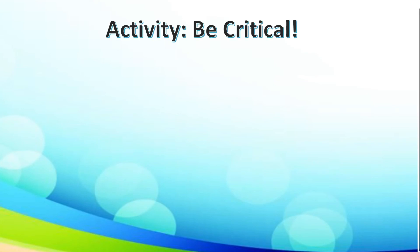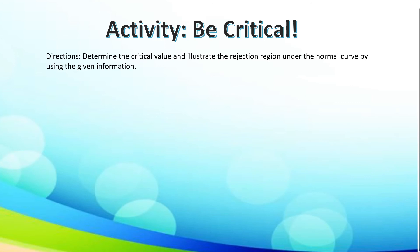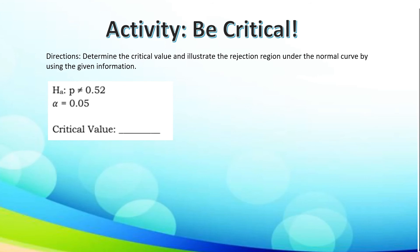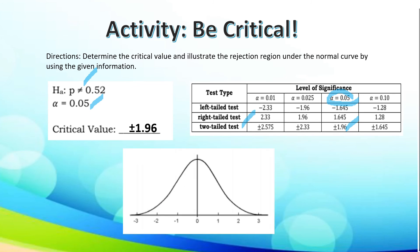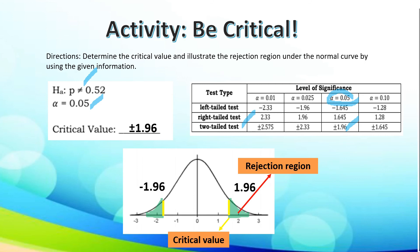Let's take the activity entitled Be Critical. Determine the critical value and illustrate the rejection region under the normal curve using the given information. First: alternative hypothesis P is not equal to 0.32, alpha of 0.05. Since not equal to falls under two-tailed test with alpha 0.05, the critical value or Z-tab is positive/negative 1.96. We illustrate the two critical values, negative 1.96 and positive 1.96, with the shaded rejection regions on both sides. Second: alternative hypothesis P is greater than 0.35 with alpha of 0.01. Since greater than falls under right-tailed test with alpha 0.01, the Z-tab or critical value is 2.33. We locate 2.33 on the normal curve and shade the rejection region on the right.